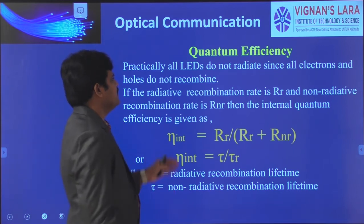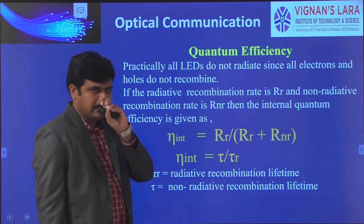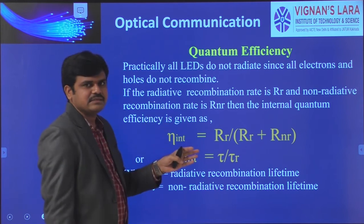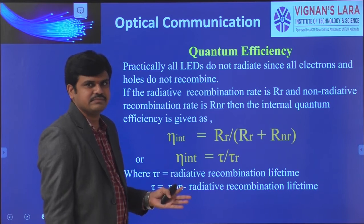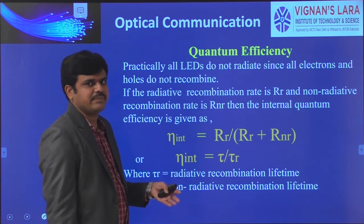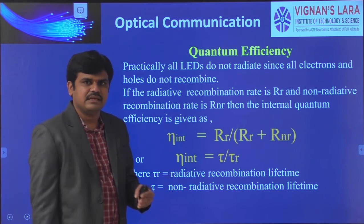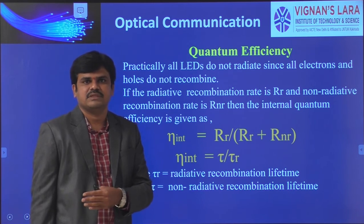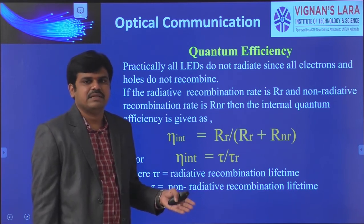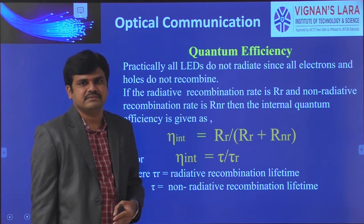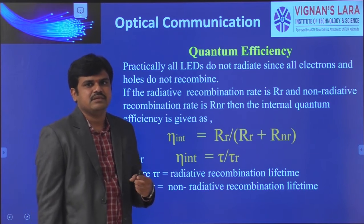Practically, in all LEDs the recombination rate is not the same. Some electron-hole pairs will recombine and emit radiation in the form of photons, but some electron-hole pairs recombine but do not emit any radiation. So there are two cases: radiative electron-hole pair recombination and non-radiative recombination. We need to consider both when calculating quantum efficiency.